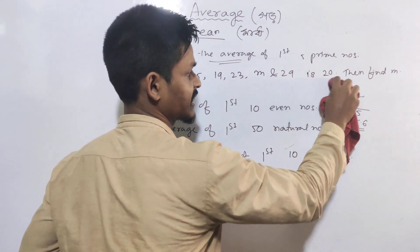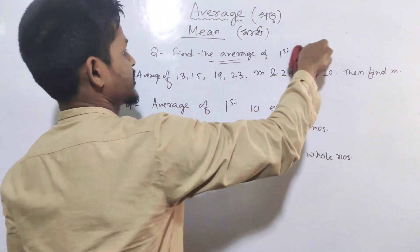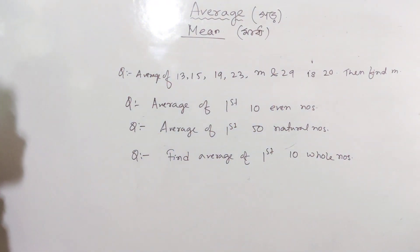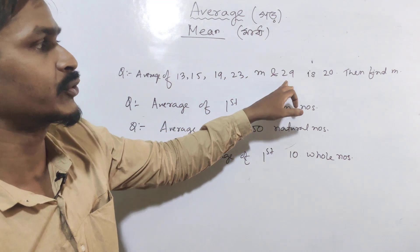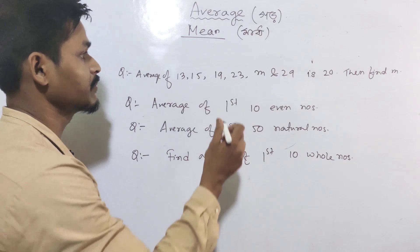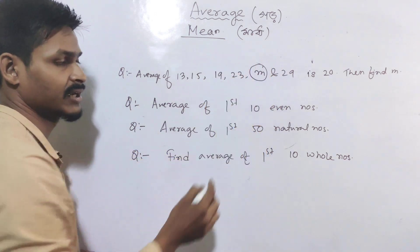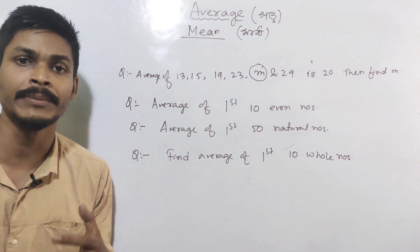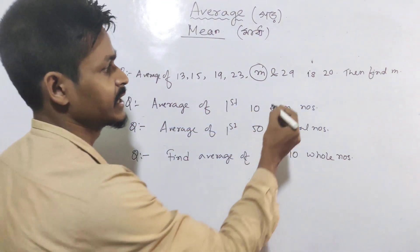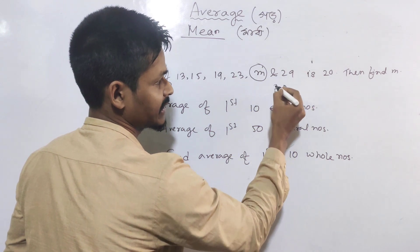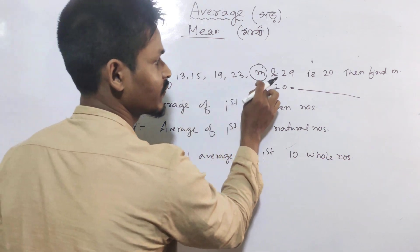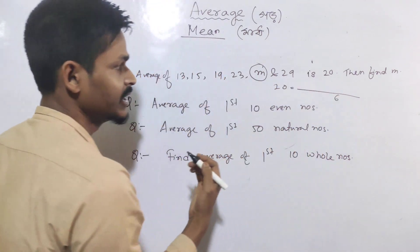Next problem: average of x is 20. The total number of terms is 6, so 6 is in the denominator. Using the average definition: sum of terms divided by total number of terms equals 20.